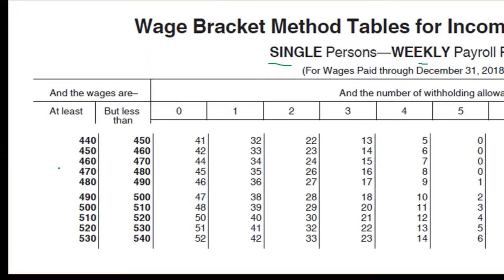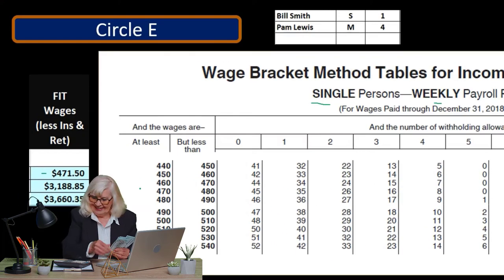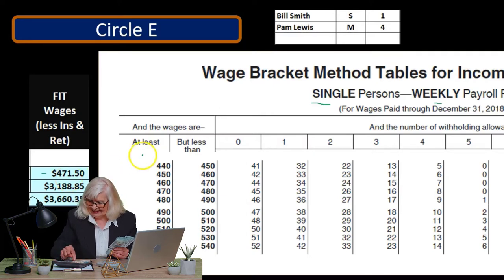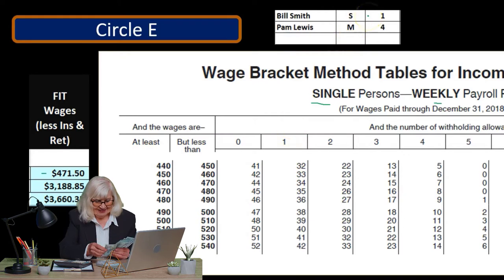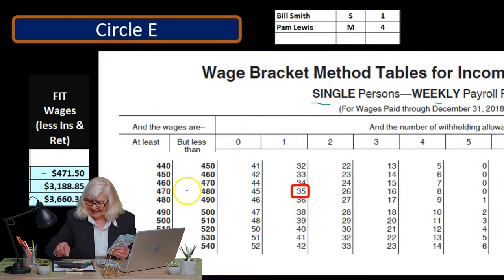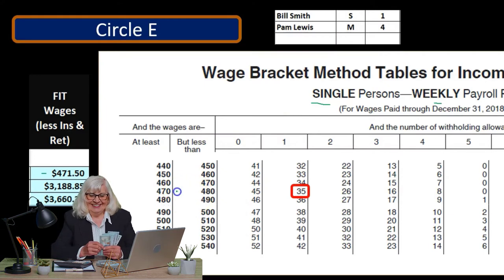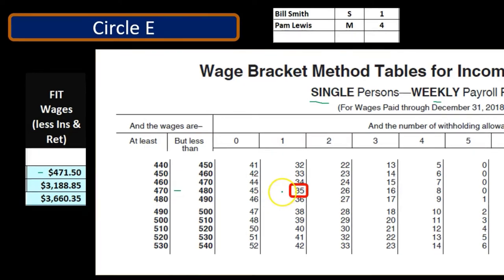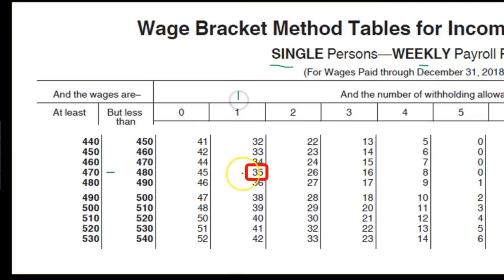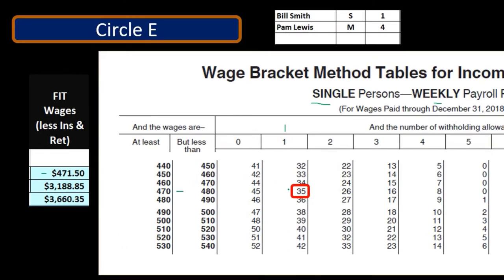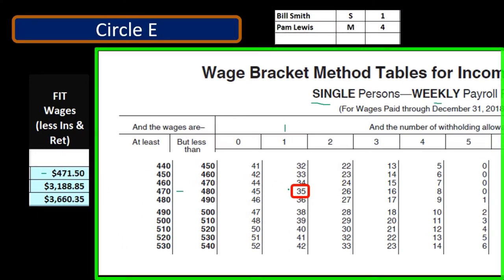It's clearly a lot easier to have software automatically look this up, but it's still important to understand why the tables are set up this way, so that we can do tax planning. So we're going to look for $471.50 within these two sets and find the number of exemptions, which for Bill is one. It falls between $470 and $480, and with one exemption that gives us $35.